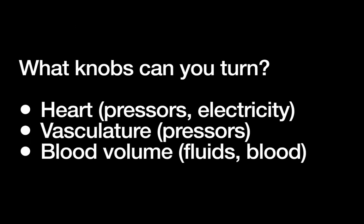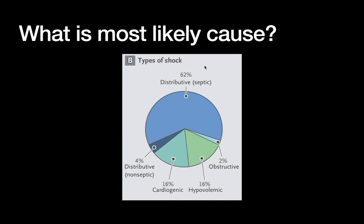These statistics are for all patients, but for surgical patients it's an even higher percentage of septic and hypovolemic shock, since infections and bleeding are two of the most common surgical complications. So priority one for any surgical patient in shock is resuscitation. Assume your patient is either infected, bleeding, or dry until proven otherwise, and make sure they're adequately resuscitated with fluids and/or blood products. If the patient is really unstable, you can give fluids and pressors at the same time, but pressors will do nothing if the container is empty of blood.